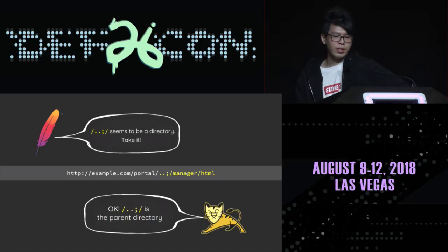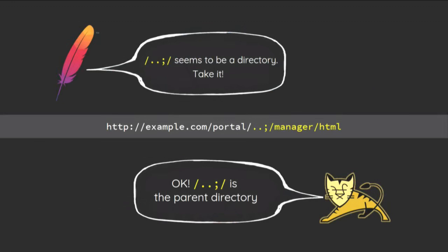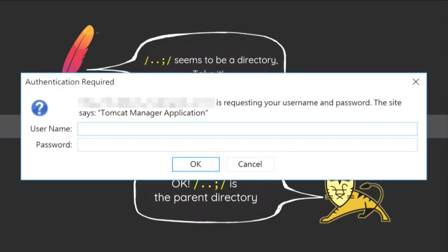For an easy example: Tomcat exposes the application portal on localhost and maps it outside via a path. Due to the normalization of the path, you normally cannot directly access the backend management interface. However, we can use our traversal trick — dot-dot-semicolon — to traverse one level and touch the root of Tomcat. Apache handles the request first. From Apache's view, dot-dot-semicolon is a normal folder name and matches the context mapping, so it passes to the backend service. But in Tomcat, dot-dot-semicolon is treated as a traversal — reaching the portal. As a result, we can access all applications on Tomcat, including the management interface. Everything looks good from each side individually, but when put together, everything starts going wrong.